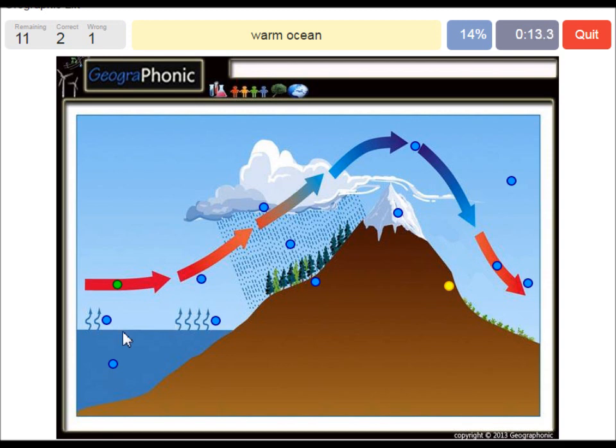A warm ocean is what is also needed. Rain shadow—this is the area where mostly we see deserts.